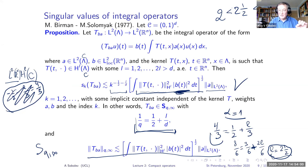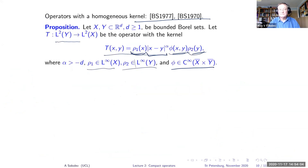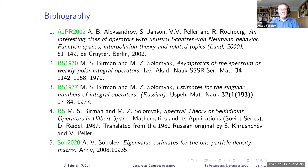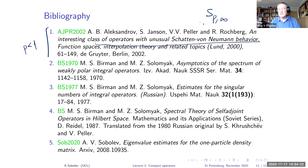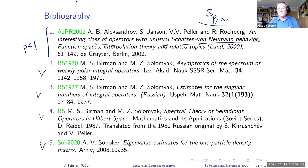Now the references. The paper for the p < 1 case is by Peller, dealing with an interesting class of operators with unusual Schatten–von Neumann behavior — that is the weak class. The Birman–Solomyak papers are the classical references I have been citing, and there is also a paper using the interpolation technique. I will show this list again next time.